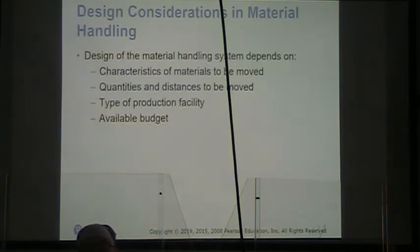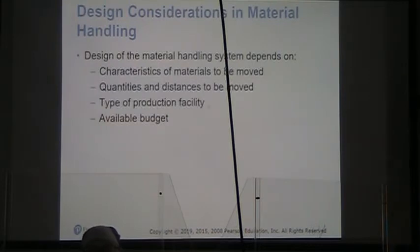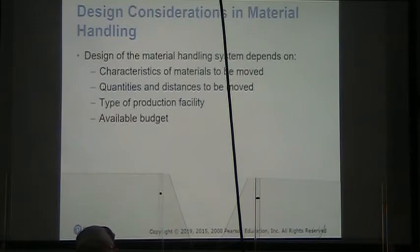The design considerations in material handling: first, what are the characteristics of the materials to be moved? What are the quantities and distances those materials will have to travel? What is our type of production facility? And what is the available budget? We always have to remember that these are economic decisions.